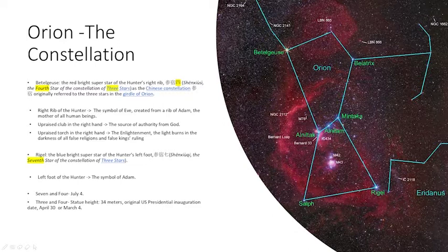We start with Betelgeuse, the bright red superstar of the hunter, Orion's right rib. In Chinese, it's called Shen Xiu Si, the fourth star of the constellation of three stars, as the Chinese constellation Shen Xiu originally referred to the three stars in the girdle of Orion.